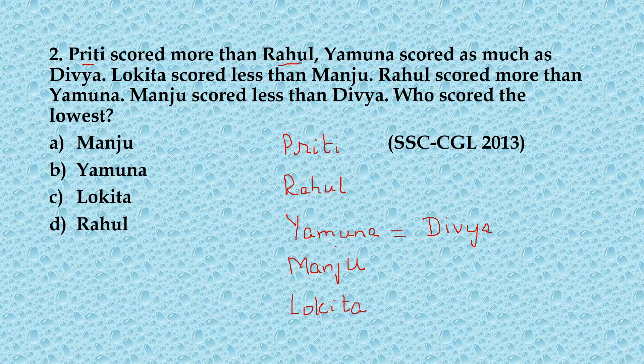Lokita scored less than Manju, so Lokita will be at the lowest position. Lokita has scored the least. According to the given information, we have arranged them in decreasing order of marks and we find that Lokita is the one who scored the least. This is again a previous year question from the SSC CGL exam 2013.